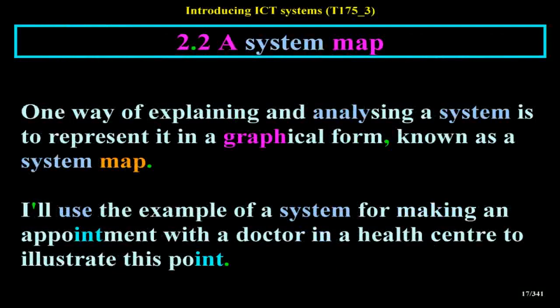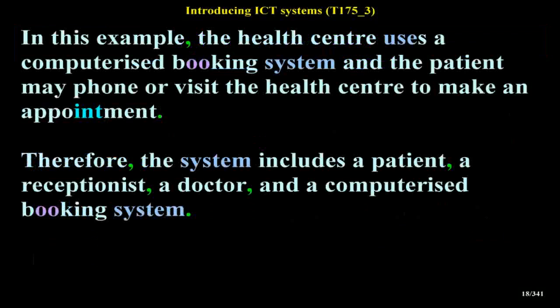One way of explaining and analyzing a system is to represent it in a graphical form, known as a system map. I'll use the example of a system for making an appointment with a doctor in a health center to illustrate this. The health center uses a computerized booking system and the patient may phone or visit the health center to make an appointment. Therefore, the system includes a patient, a receptionist, a doctor, and a computerized booking system.